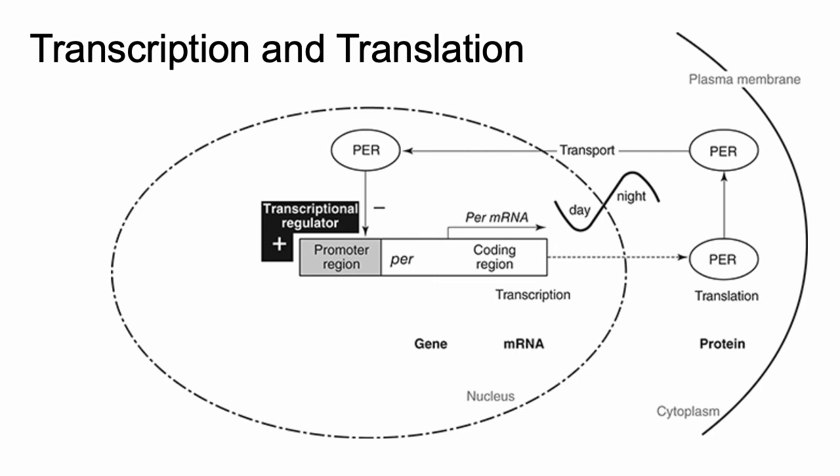This schematic shows transcription and translation using the per gene: a transcriptional regulator binds to the promoter region, allowing per mRNA to be made; it goes into the cytoplasm to make PER protein; PER protein returns to the nucleus and inhibits the transcriptional regulator; protein breaks down, inhibition ceases, and the next cycle begins. We're stopping this video here, and the next video will continue looking at more of the molecular clock, eventually covering the modern blueprint of what we know — which is more complicated than what we've seen here.